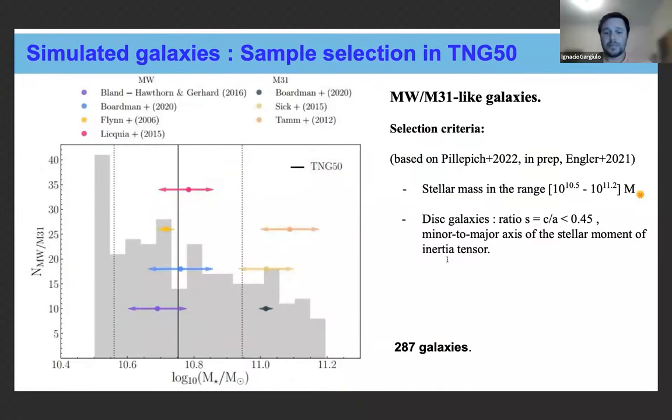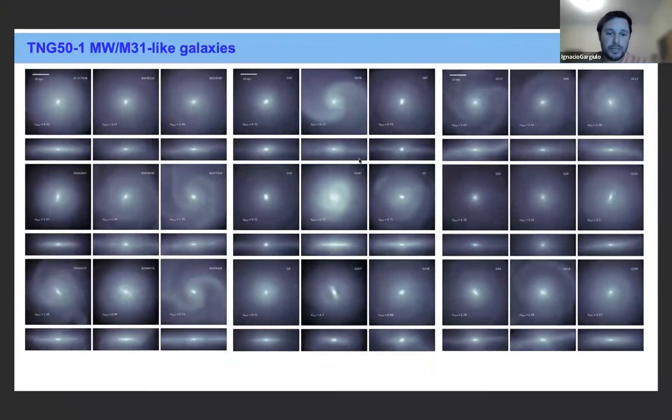So the sample, we select these Milky Way M31-like galaxies in the mass range indicated here in the slide. The diskiness is quantified by the minor to major axis ratio of the stellar moment of inertia tensor, and we got 287 galaxies with the mass distribution shown in the plot. And in gray, where these arrows are the mass estimates for the Milky Way and M31 for different authors. And well, this is a mosaic of the whole sample, but we can notice here the large diversity of galaxies with many detailed features due to the resolution power of these simulations. So we have great diversity with high resolution.